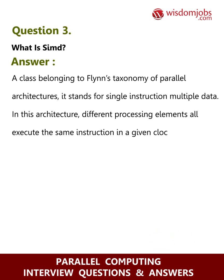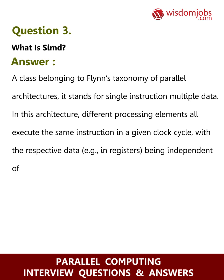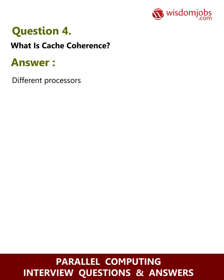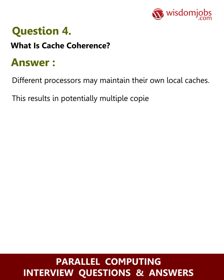With the respective data, e.g. in registers, being independent of each other. Question 4: What is cache coherence? Answer: Different processes may maintain their own local caches, resulting in potentially multiple copies of the same data.